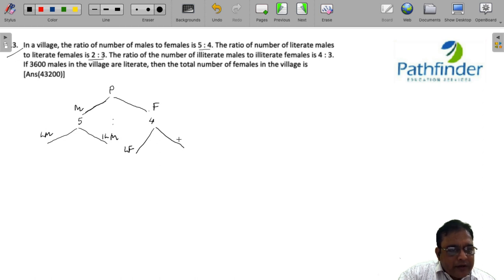The ratio of number of literate males to literate females is 2 is to 3, so I can write literate males as 2x and literate females as 3x. The ratio of number of illiterate males to illiterate females is 4 is to 3, I can write that as 4y and 3y.